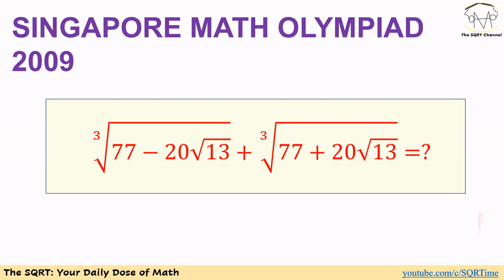Hello everyone, welcome to the security channel. In this video we are going to talk about another problem from the Singapore Mathematical Olympiad 2009. In this problem we have a beautiful expression we want to evaluate: the third root of (77 minus 20 times square root of 13) plus the third root of (77 plus 20 times square root of 13). Before moving forward, make sure you pause the video to think about this problem — we are not allowed to use any calculator here.